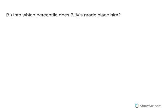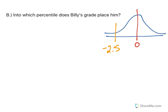Now let's use that to answer part B. Into which percentile does Billy's grade place him? If I'm looking at the normal distribution with a mean of 0, Billy falls at a negative 2.5. This is a z-score.